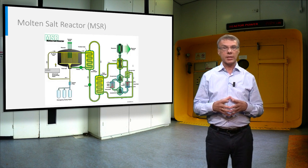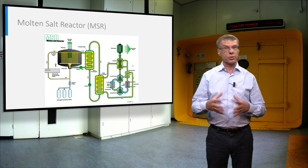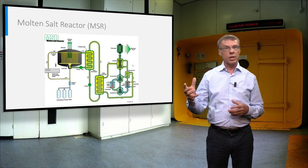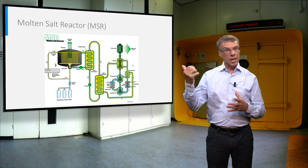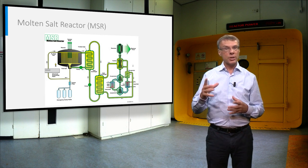Fortunately, reactors like this exist, namely the molten salt reactor. This reactor consists of a large block of graphite, the gray oval shape in the plot, with channels in it.